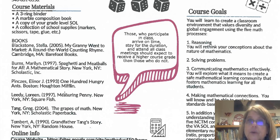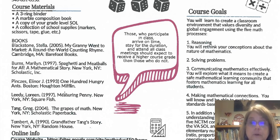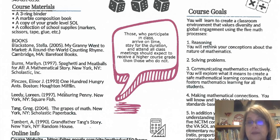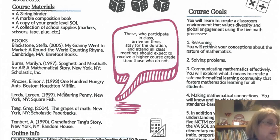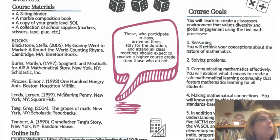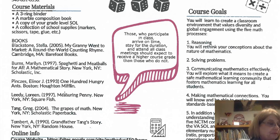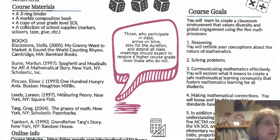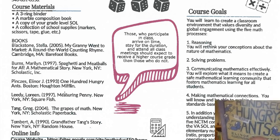The books are in the bookstore and they do have used copies available at a lower price. The nice thing about purchasing through the bookstore is that you're not paying shipping. We need: My Granny Went to Market (the Around the World Counting Book), Grandfather Tang's Story, Measuring Penny, Spaghetti and Meatballs for All, The Grapes of Math, and 100 Hungry Ants.